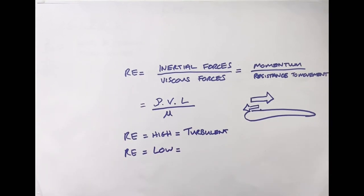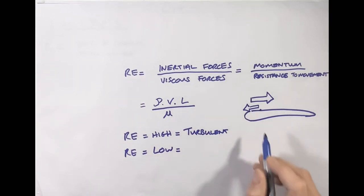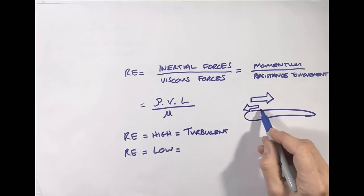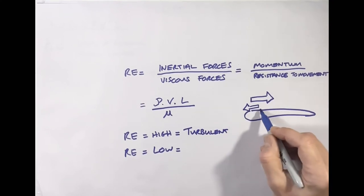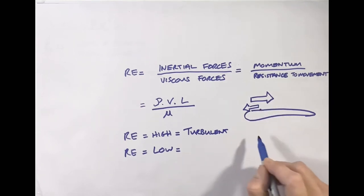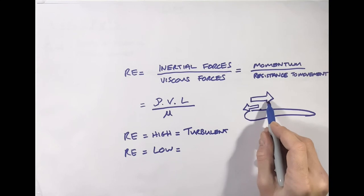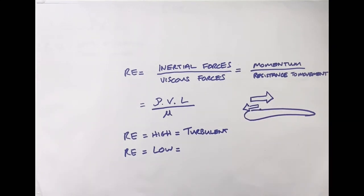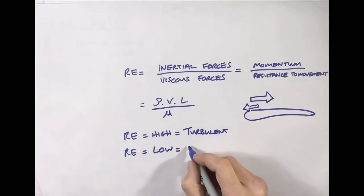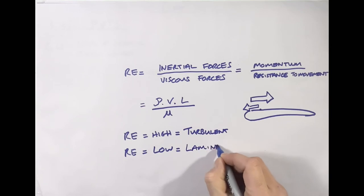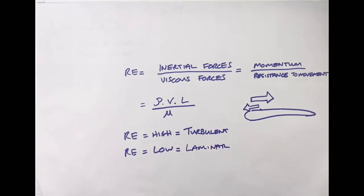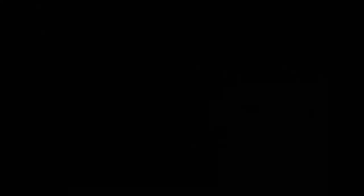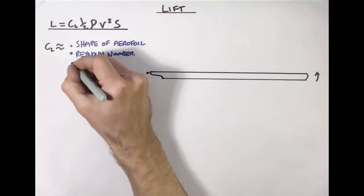Conversely, if you have quite high viscous forces, there is more resistance — a more gradual transfer of energy between the surface and the free stream air — which gently slows the airflow down. You get a more controlled, laminar flow over the aerofoil, more resistant to separation, and therefore you maintain your lift for longer. So that's Reynolds number.